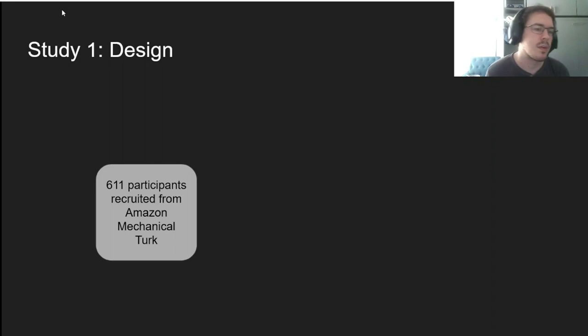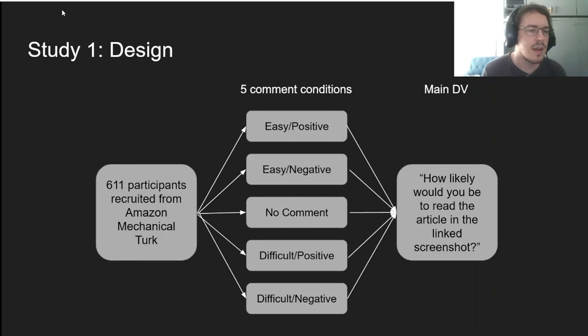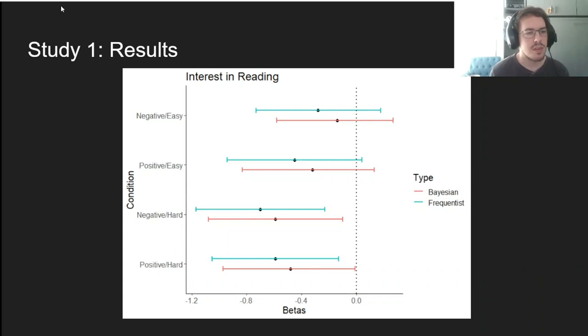So to test this, we recruited about 600 people from MTurk, assigned them to one of five conditions including a no comment control, and asked how likely they would be to read the article in the linked screenshot.